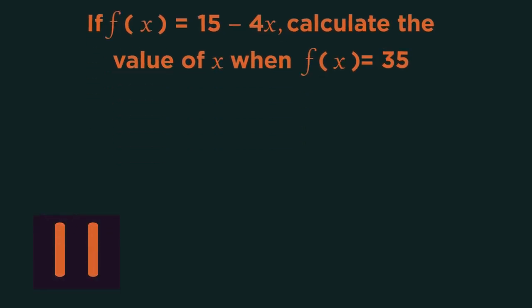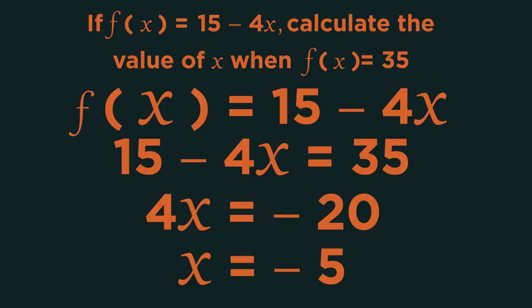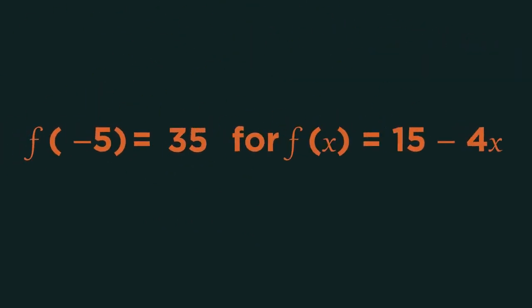Pause the video, solve for x, and click play when you're ready. Did you get x = -5? So an input of -5 will give an output of 35.